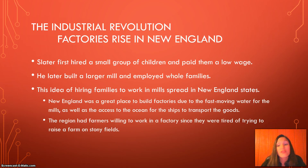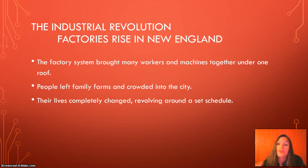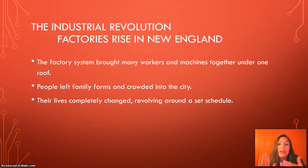The factory system brought many workers and machines together under one roof. People left family farming and crowded the cities to find work. Their lives completely changed, revolving around a set schedule — a whistle telling them when to have breakfast, lunch, and supper, when to work and when to go home. Life completely changed from living on the farm and making their own goods to living by the factory schedule.